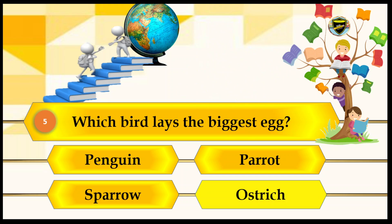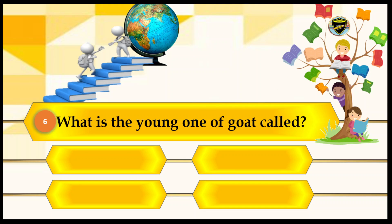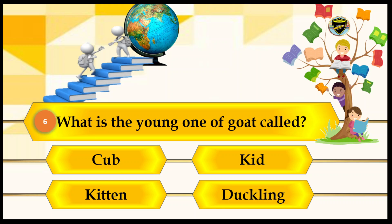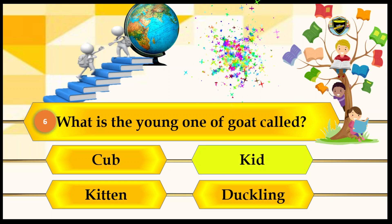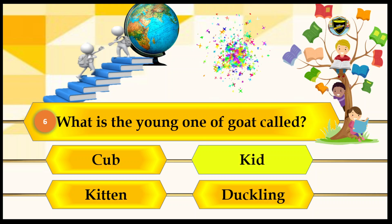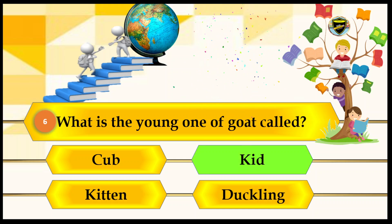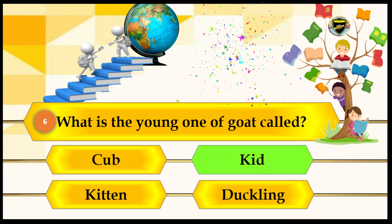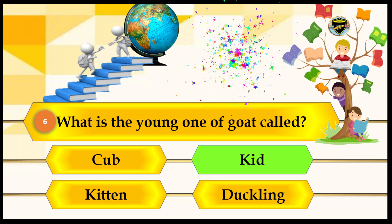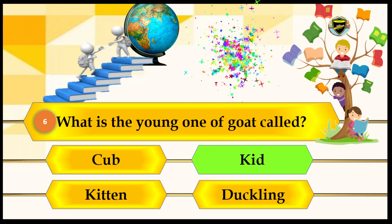Let's see the next question. What is the young one of a goat called? Your options are cub, kitten, duckling, and kid. Let's lock kid. That's the correct answer. I hope many of you are getting the answers right.